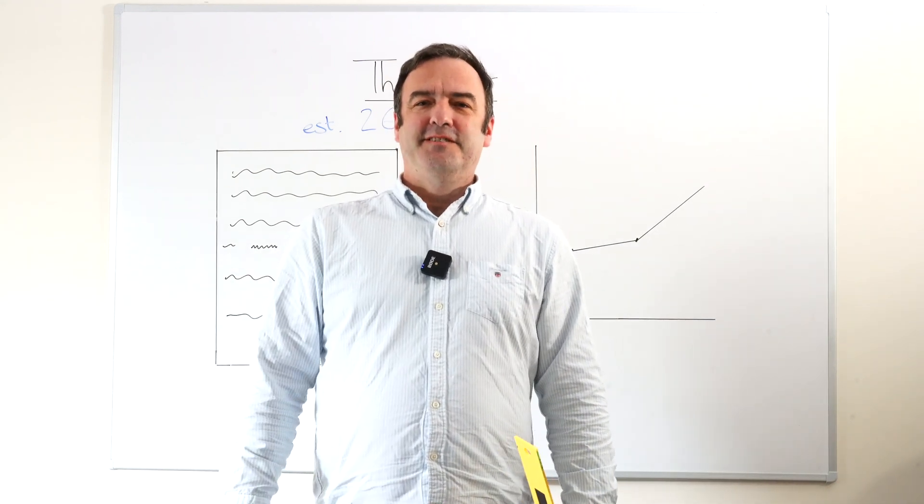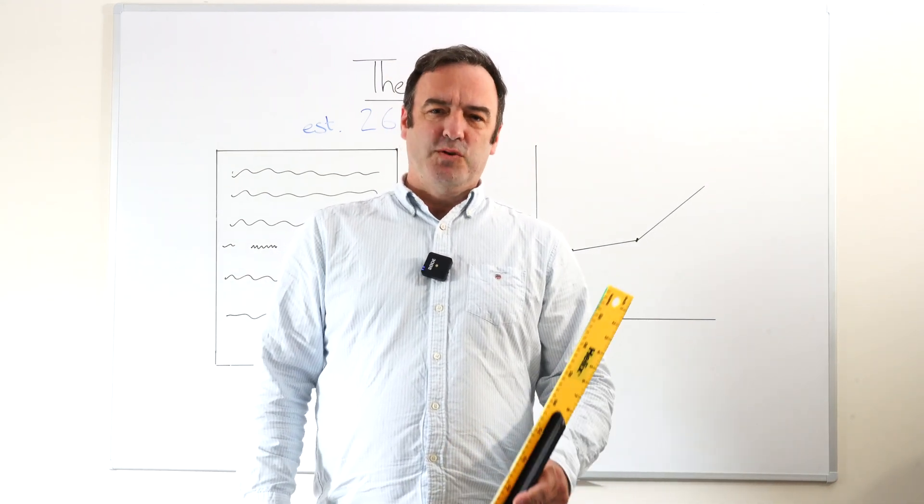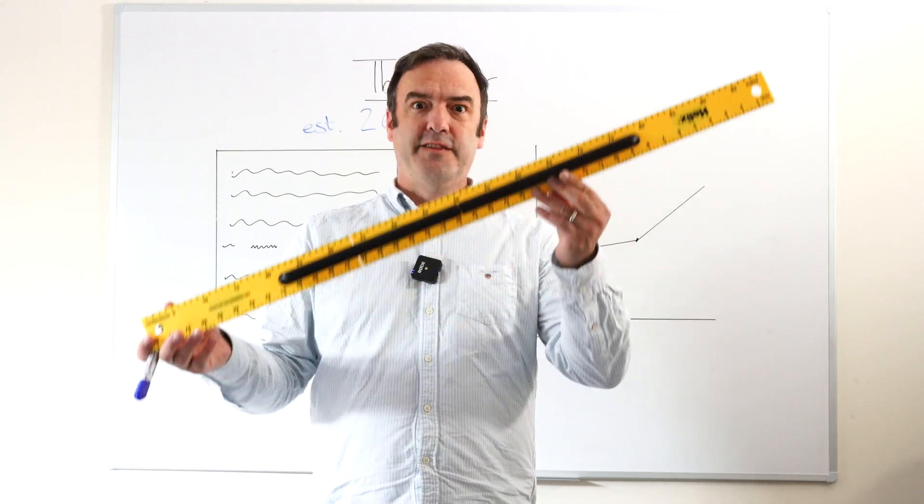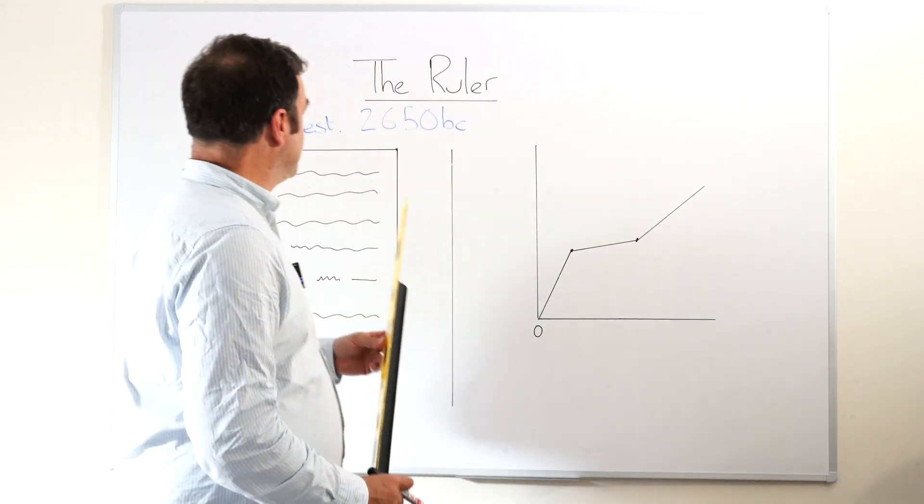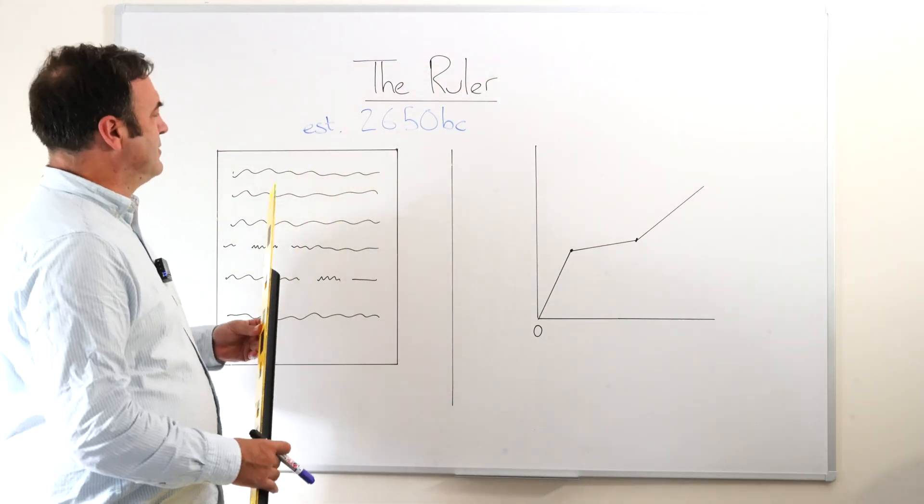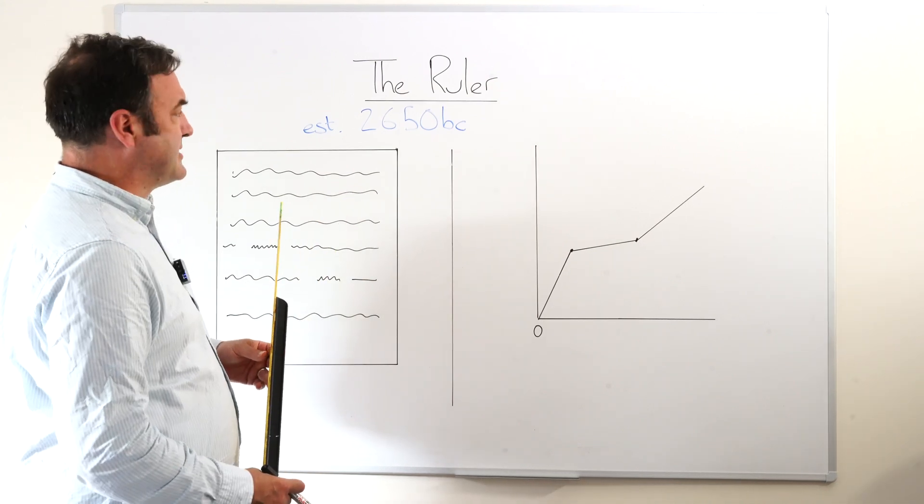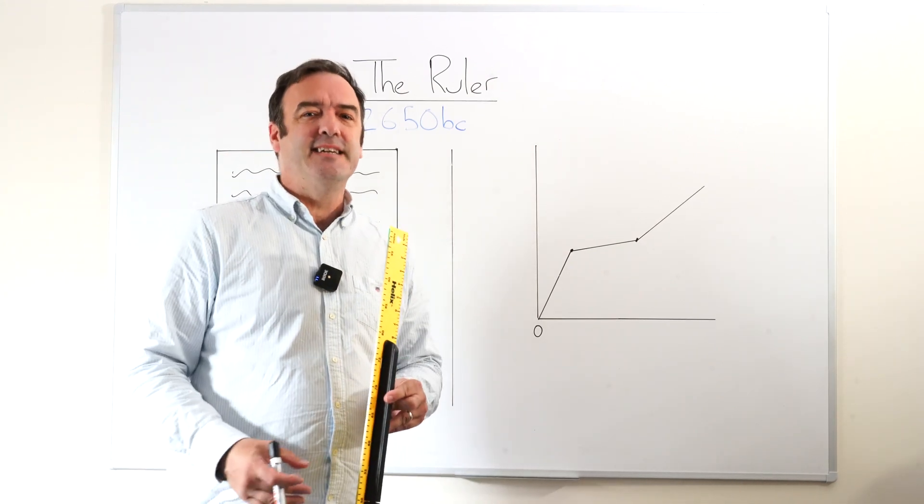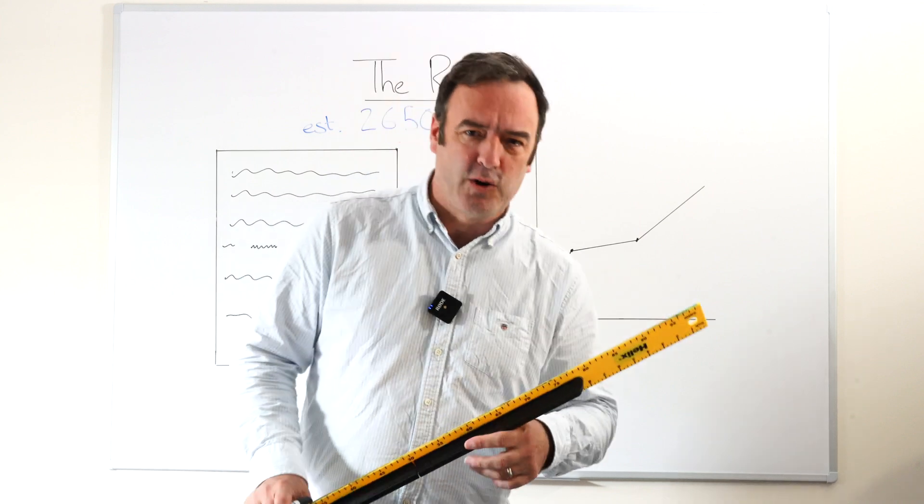Hi, it's Jameson. For 11 plus students again, today I'm going to talk to you about our friend the ruler. First established, they think, with first recorded evidence 2650 BC, so these things have been around for a long while.